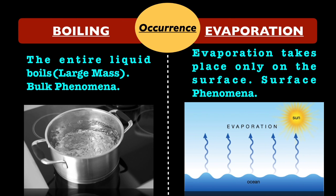The second difference is based upon the occurrence. Boiling is a bulk phenomenon, as in this process the entire liquid boils — it is associated with large mass. Whereas evaporation takes place only on the exposed surface of the liquid. Hence, it is called a surface phenomenon.